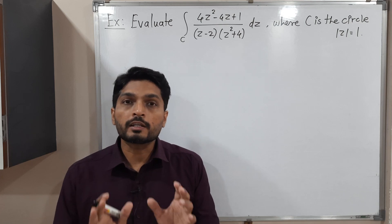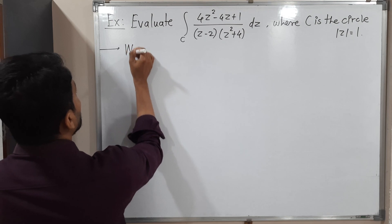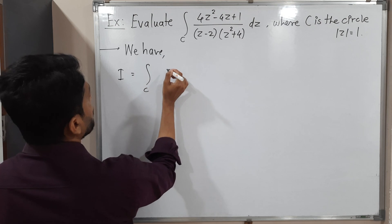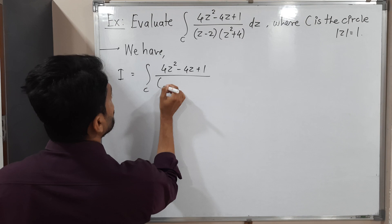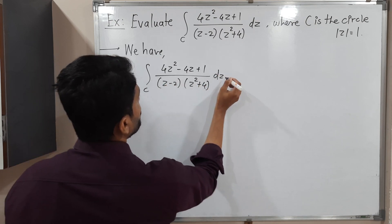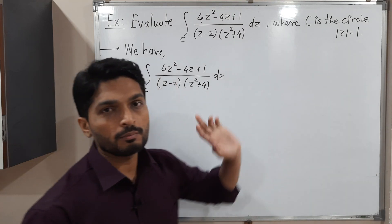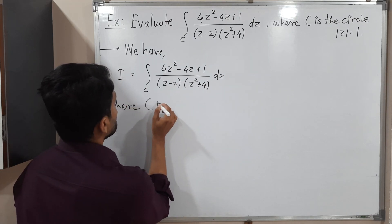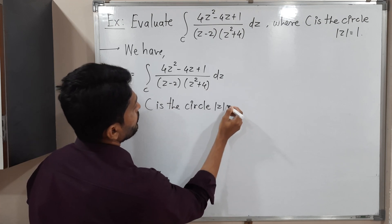Let us start to solve this example. First of all, I will call the given integral as I. The most important thing is the given curve. Here we have curve C is a circle |z| = 1.